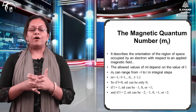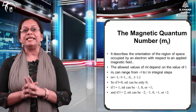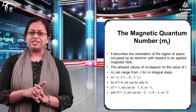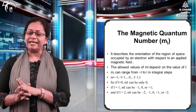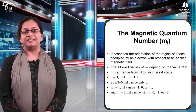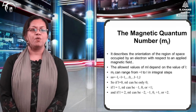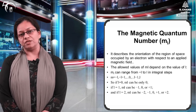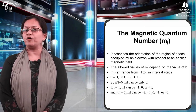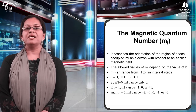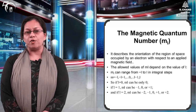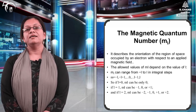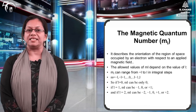When n=1, l=0 and ml=0, so only one orbital is possible — the 1s orbital — and it has only one orientation. Ab orbital aur orbit mein fark hai: orbit is a fixed path where the electron moves, but orbital is the probability space around the nucleus where the electron is most likely to be found. In the wave mechanical model, we talk about orbitals, not orbits.